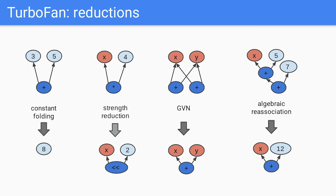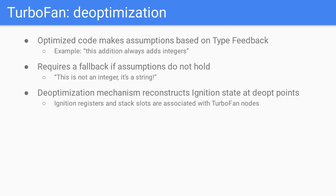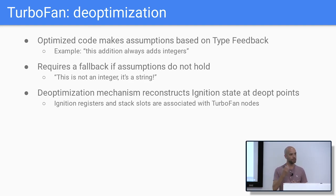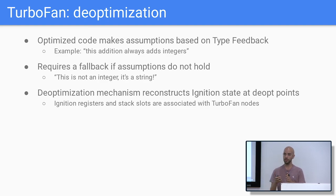TurboFan can perform optimizations including constant folding, strength reduction to make operations faster, global value numbering (GVN) to reduce duplication of nodes in the graph, and algebraic re-association. We optimize functions based on the type feedback seen so far. If the assumed types don't match what we encounter, we deoptimize and go back to the interpreter, throw away the optimized code, resume from interpreted code, and update the type feedback. If the function gets hot again, we re-optimize. To support this, we associate metadata at every point in optimized code.